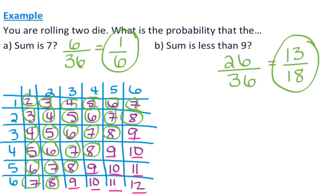What I did just now is use the complement — instead of finding all sums less than 9, I found the count that are 9 and greater because I didn't feel like counting all those other numbers. But either way, you still get the same probability.